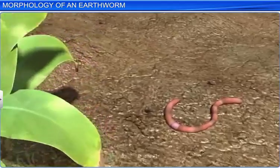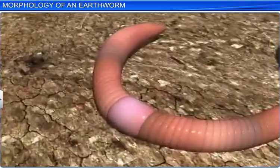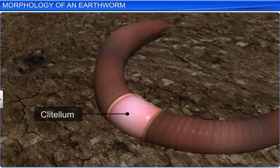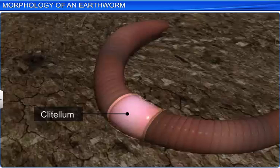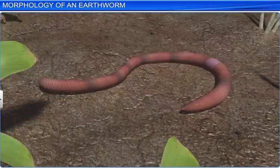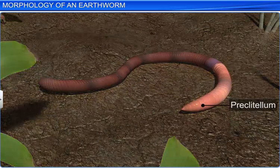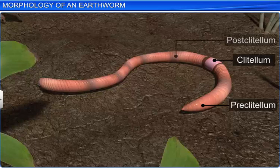The body of a mature earthworm has a thick, dark band called the clitellum. This band is formed around the 14th to the 16th segments due to the secretion of glandular tissue, and divides the body into three parts: the pre-clitellar, clitellar, and post-clitellar segments.